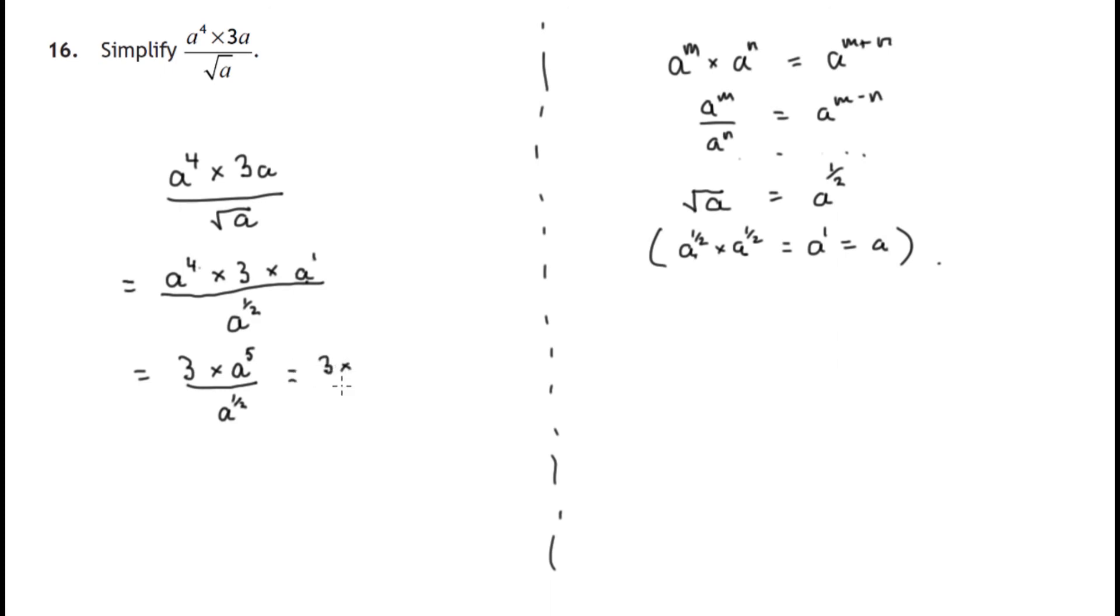So that's 3 times a to the power of 5 over a to the power of 1 half. And we invoke this rule here where we're dividing powers of a number - we subtract the indices.